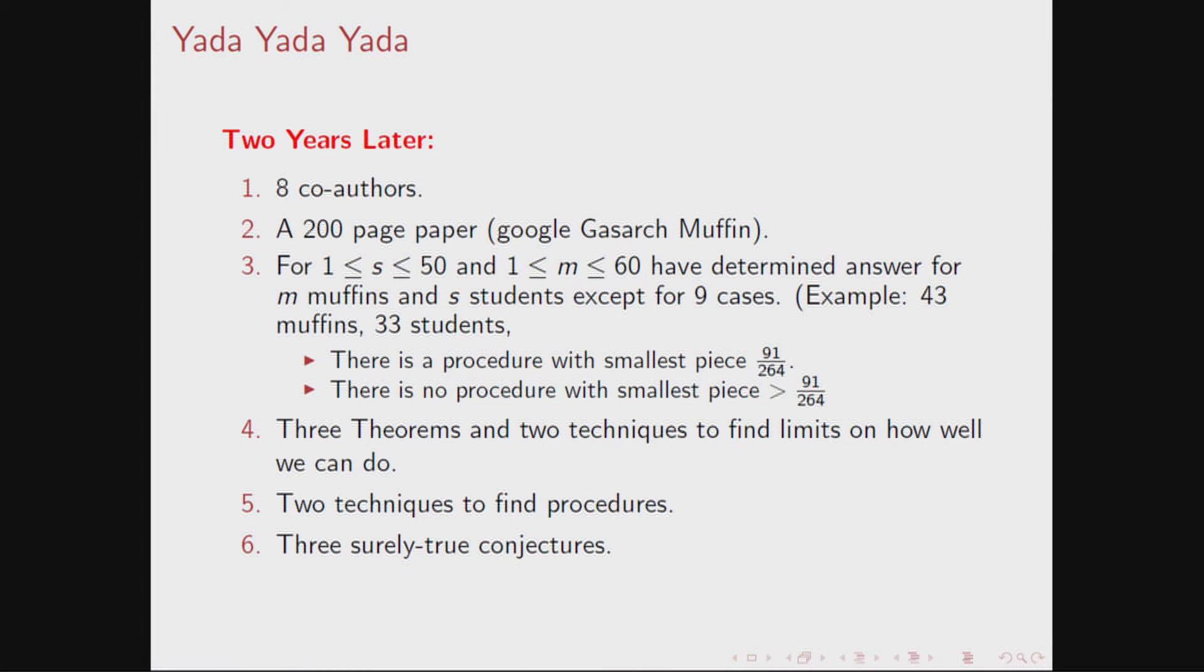Well, yada, yada, yada, two years later, eight co-authors, a 200-page paper, you can Google Gasarch muffins, and for 1 less than S less than 60, number of students between 1 and 50, and M less than 160, we have the answer, except for nine cases. That's not true. On the Amtrak up here, I cracked four more cases, but I lost two other cases, so I don't quite know how that works. I think I'm under nine now.